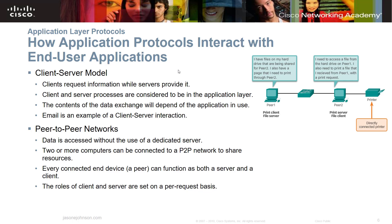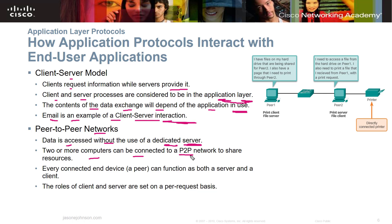How do application protocols interact with end-user applications? In the client-server model, the client requests information while servers provide it. Client and server processes are considered part of the application layer, and the contents of the data exchange depend on the application in use. Email is a classic example: an email client sends information, the server receives it and notifies the recipient that mail is available.